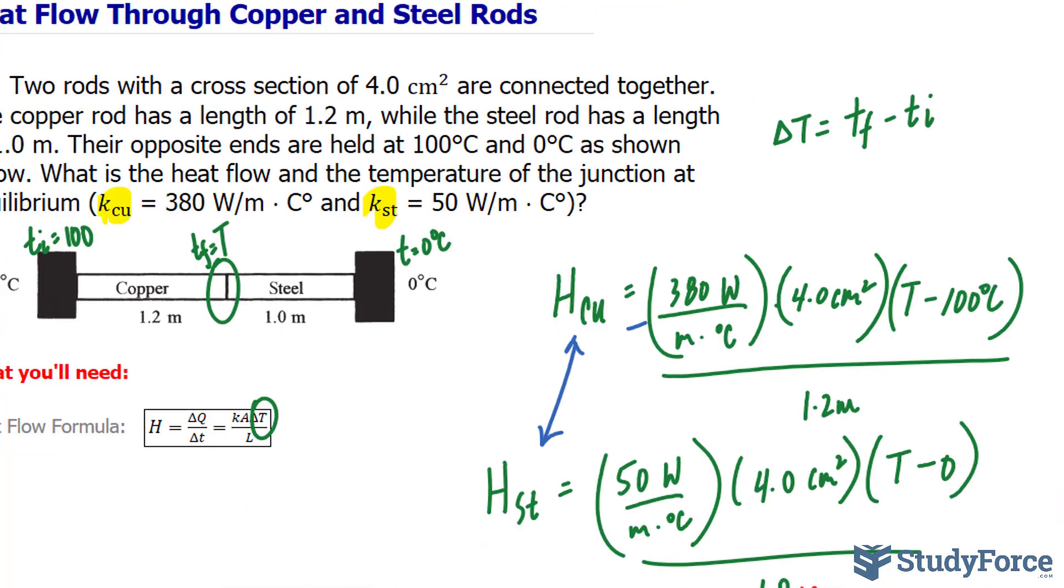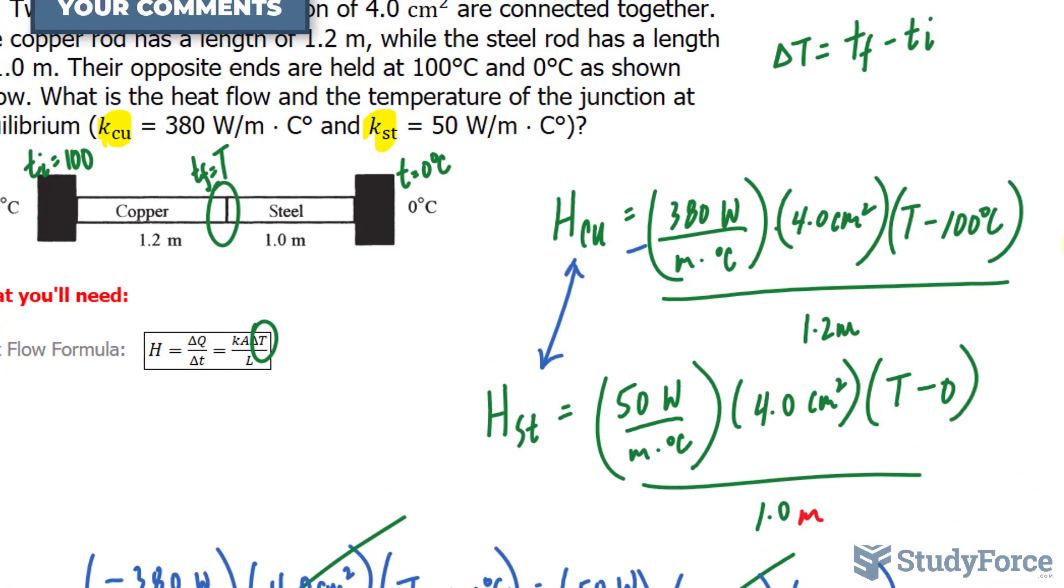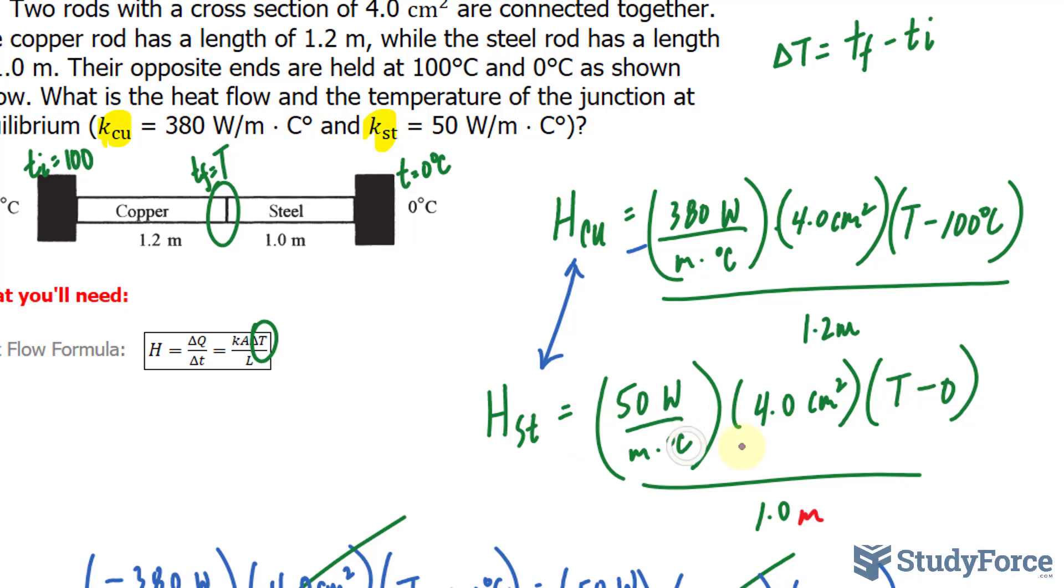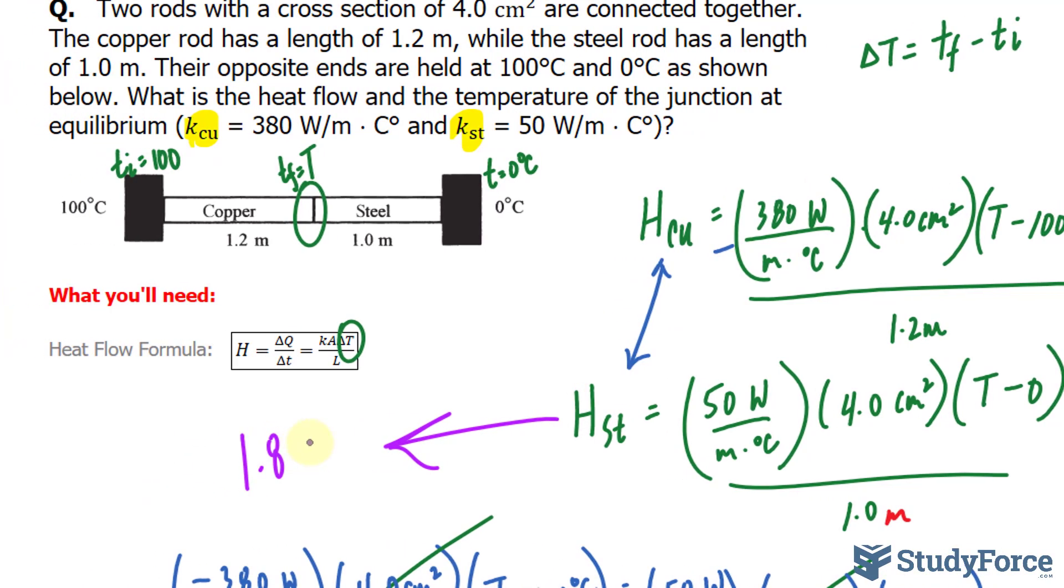All you have to do is take this value and substitute it into either one of these equations. You can substitute it into here or into there, preferably this one because it's simpler to work with. And you should end up with a heat flow that is equal to 1.8 watts. 1.8 watts is the heat flow all throughout the length of these two rods.